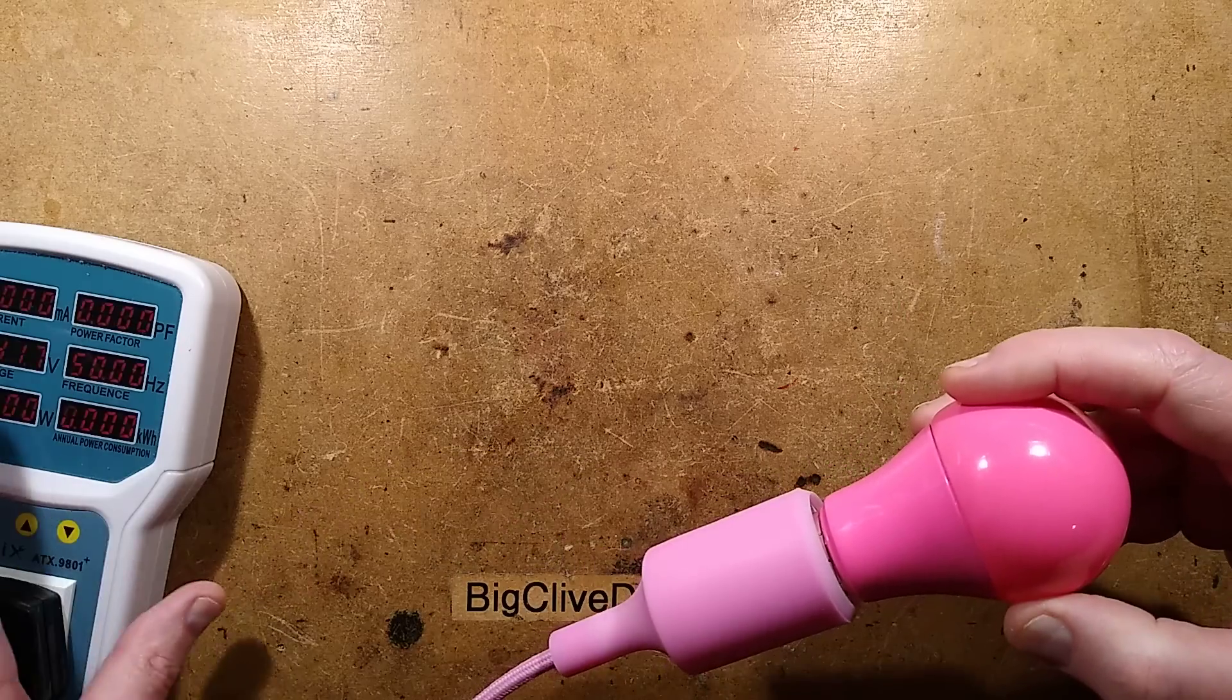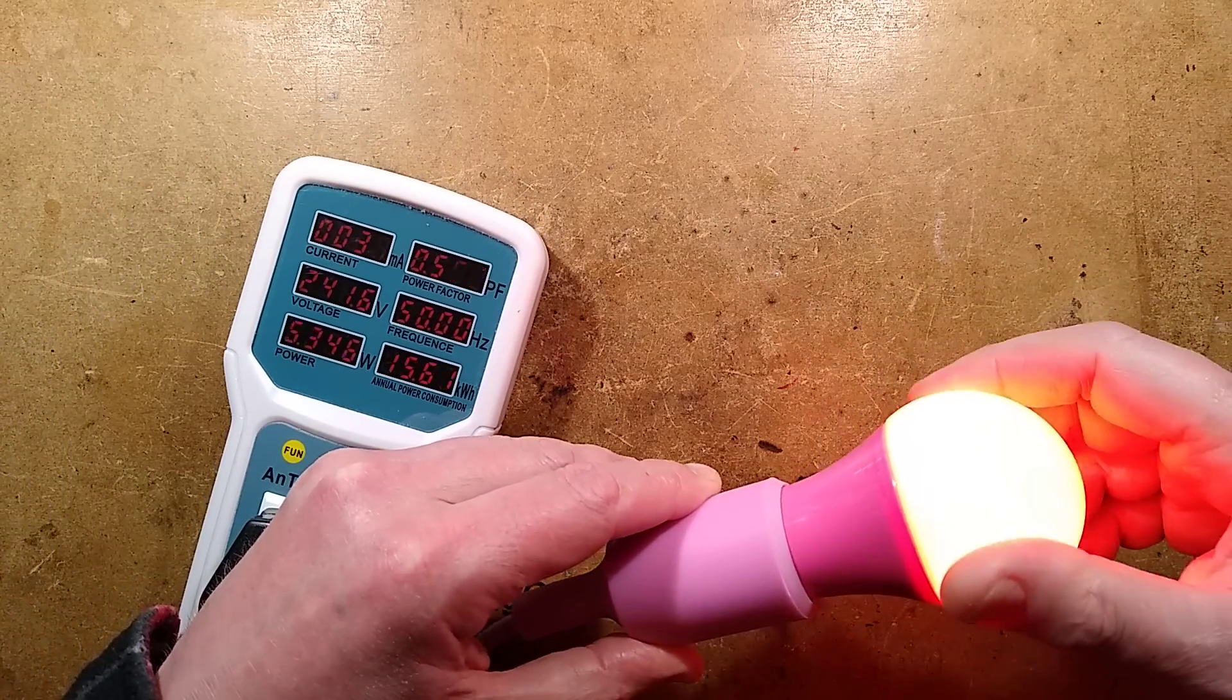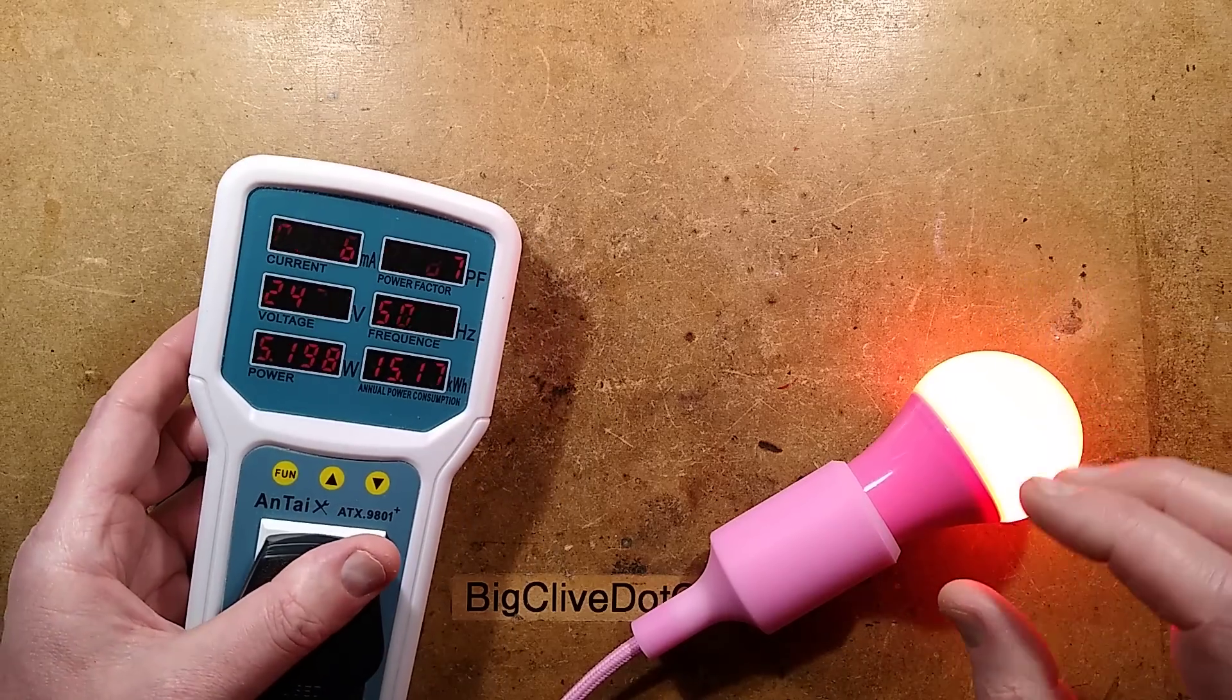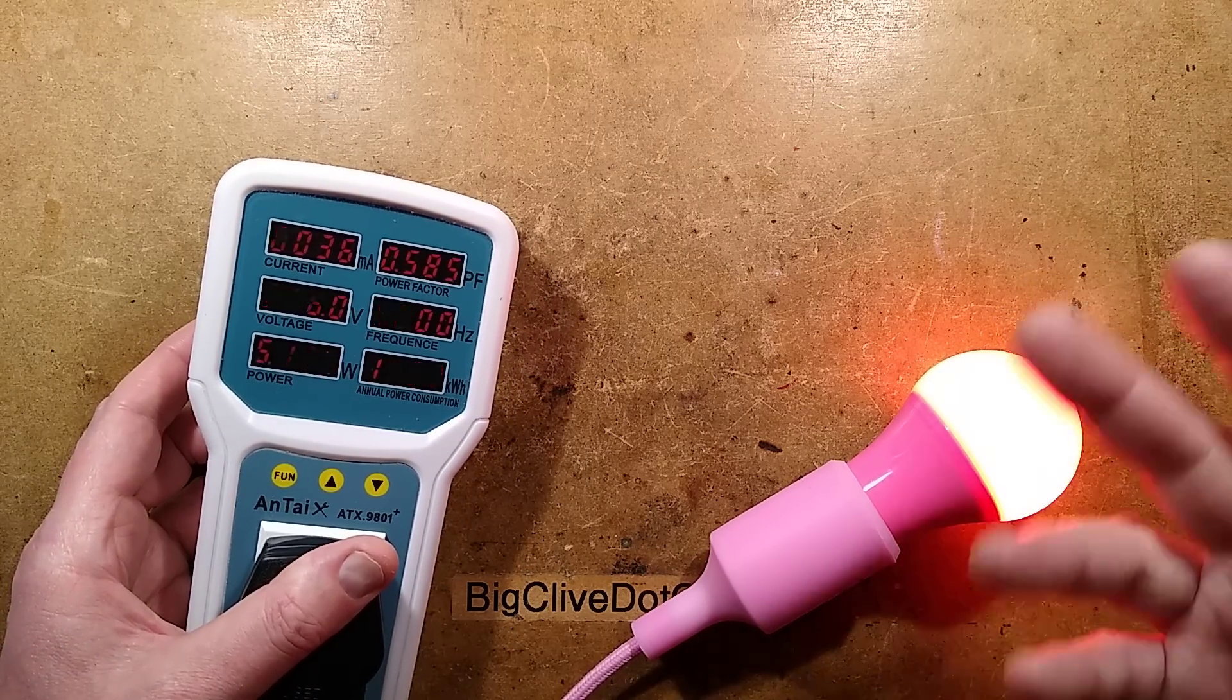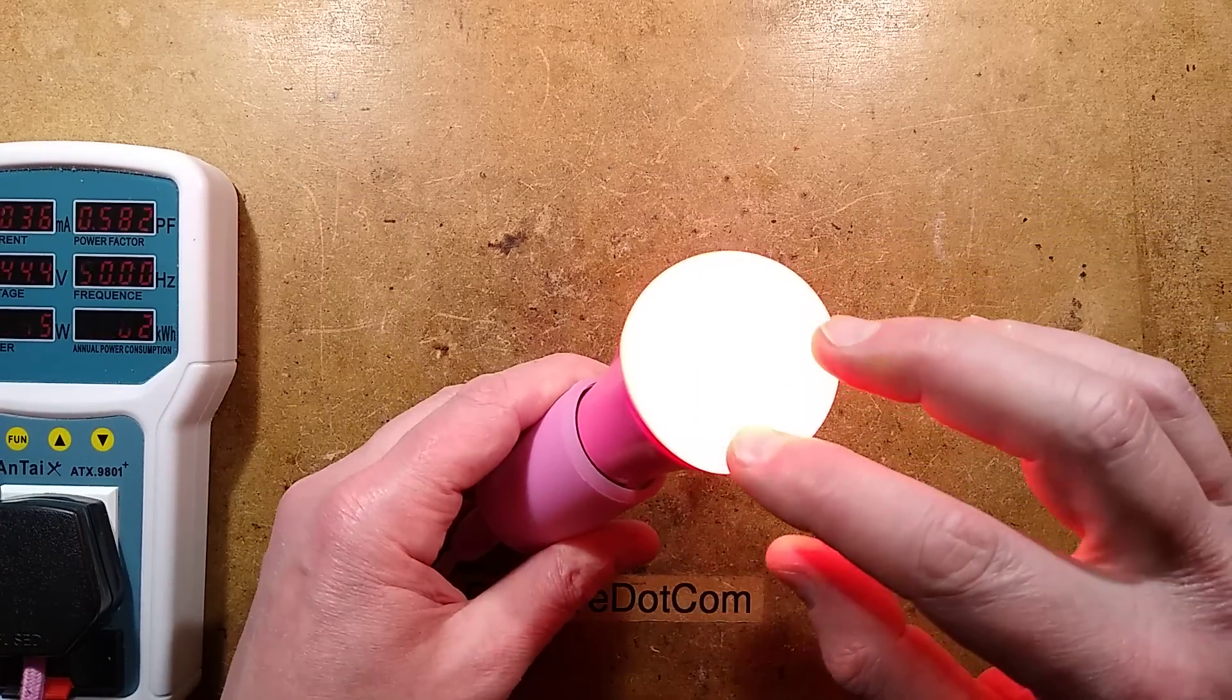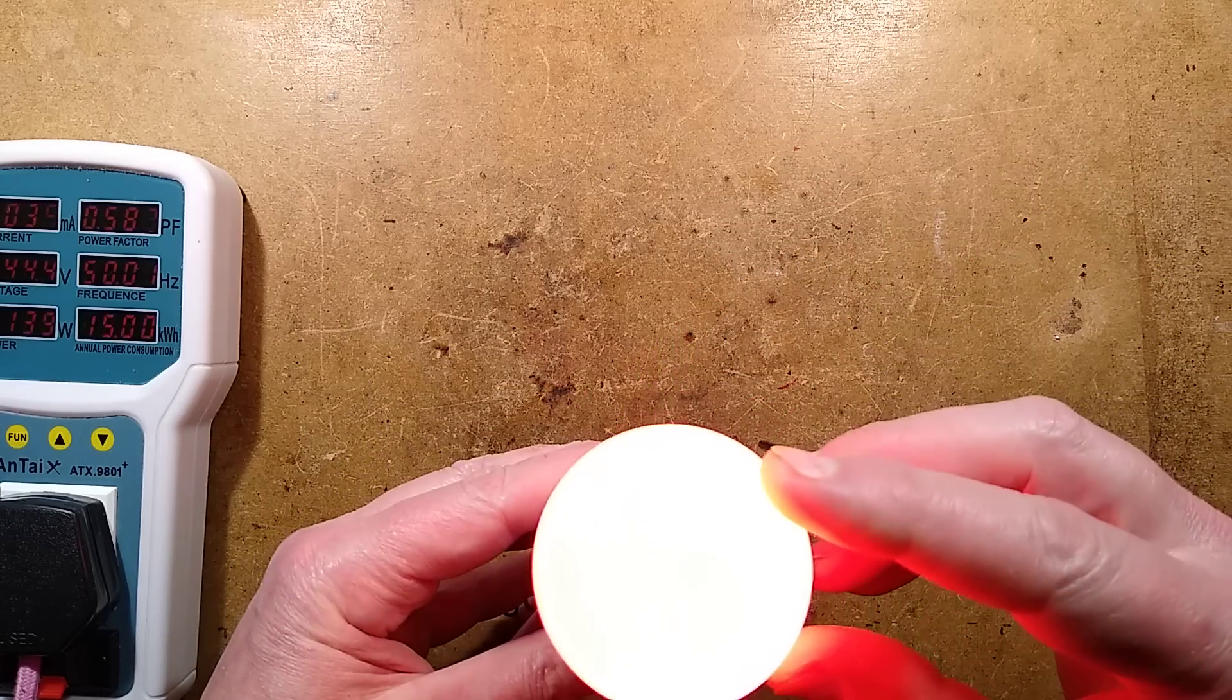Let's plug it in and see what the power consumption is. I'm using the Ancel this time with a slightly dimmer display. It is lit pink and the power consumption is 5.2 watts, power factor 0.6 which is typical. I'm wondering, is this using white LEDs under a pink cover or is it actually magenta LEDs for maximum efficiency?